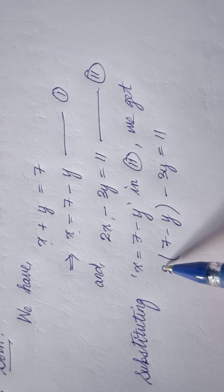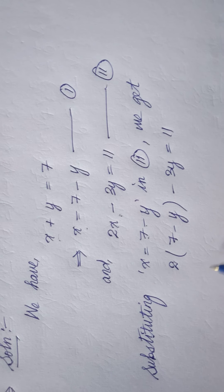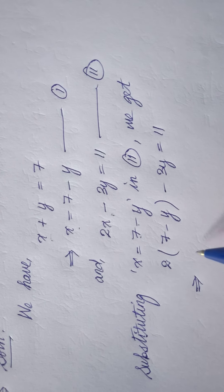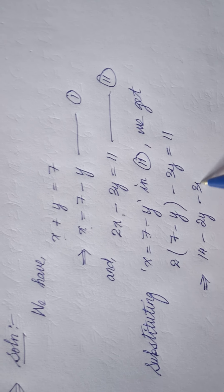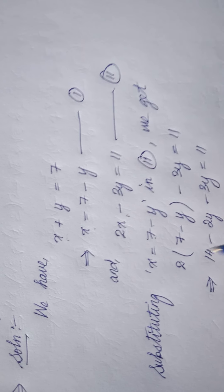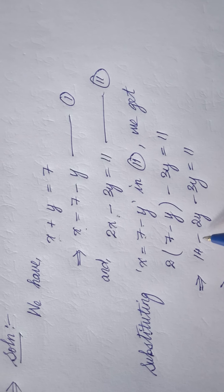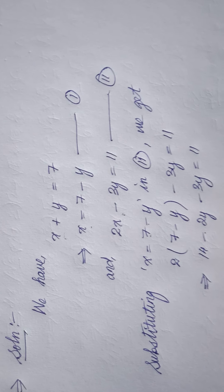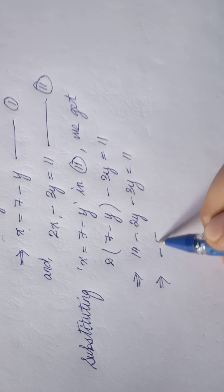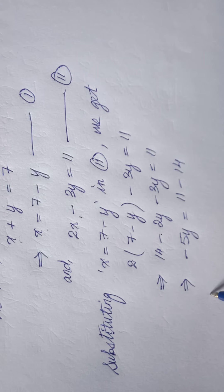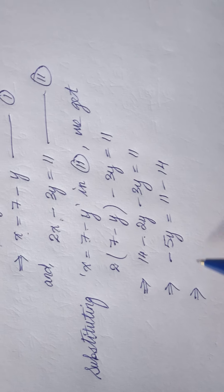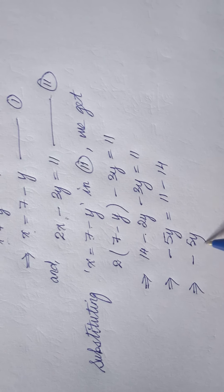If I multiply this, 2 times 7, twos are 14 minus 2y minus 3y equals 11. 14 has to move to the right hand side. Negative 2y and negative 3y is negative 5y which equals, negative 5y equals minus 3.